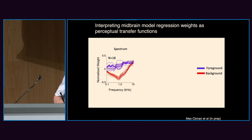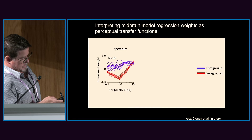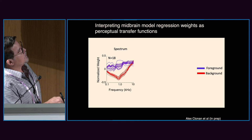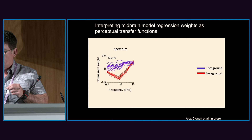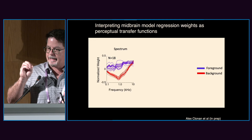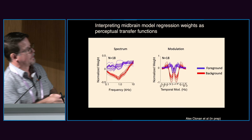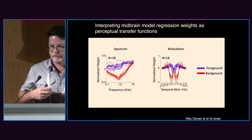We can take those model weights and project them back into the relevant spaces. The red lines represent the 18 participants. The background has an inhibitory effect — a negative set of weights tuned to about 1,000 Hz, very much like an audiogram, indicating that's where the most masking effect occurs. In the modulation dimension, there appears to be substantial masking occurring for all participants in the low frequency bands.